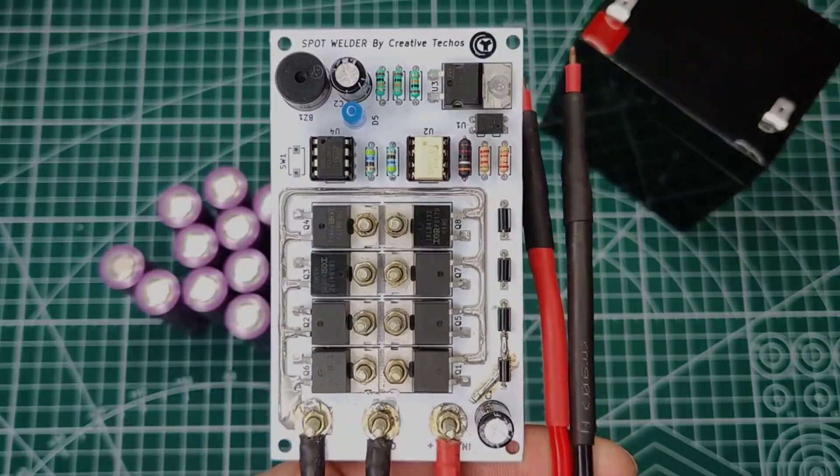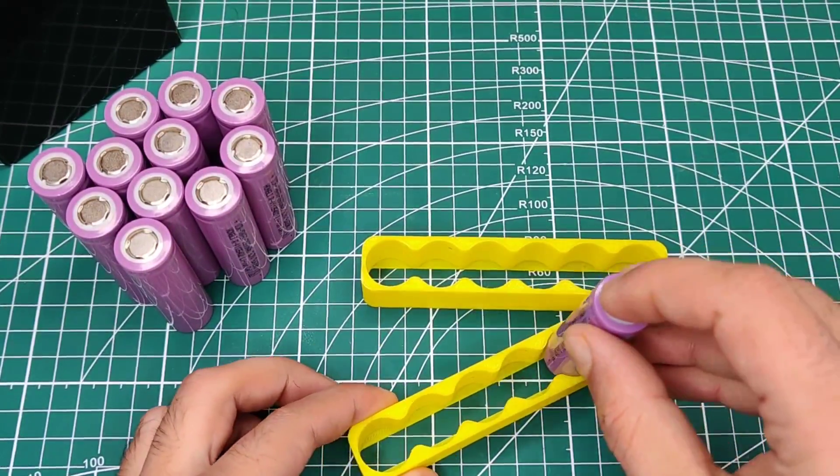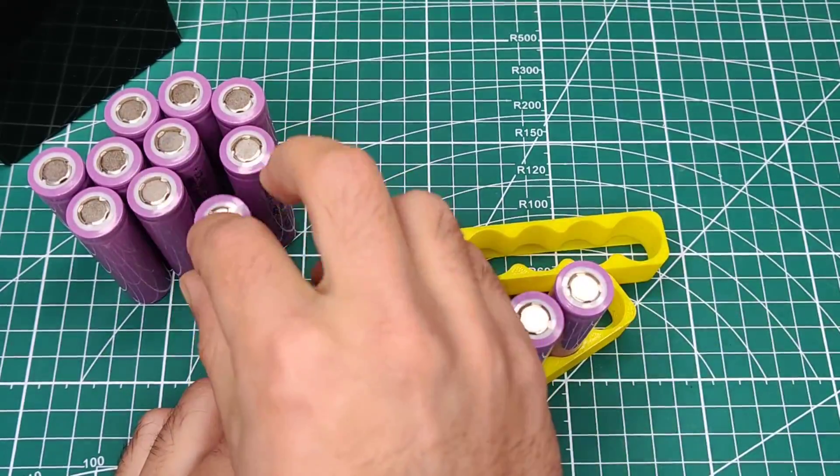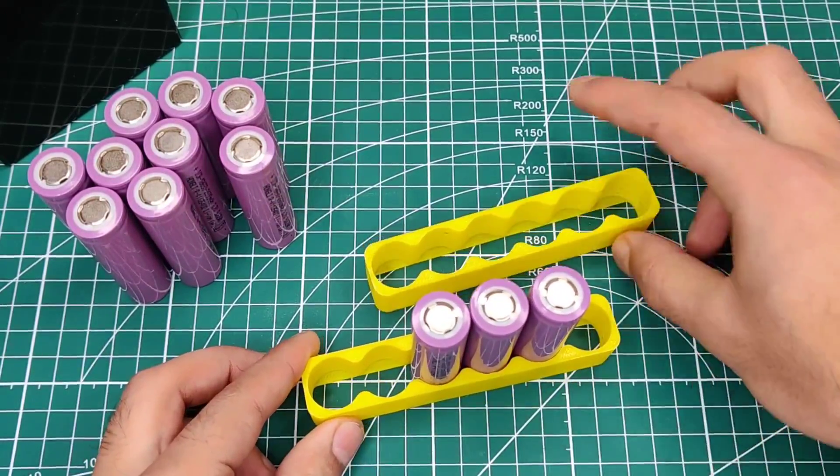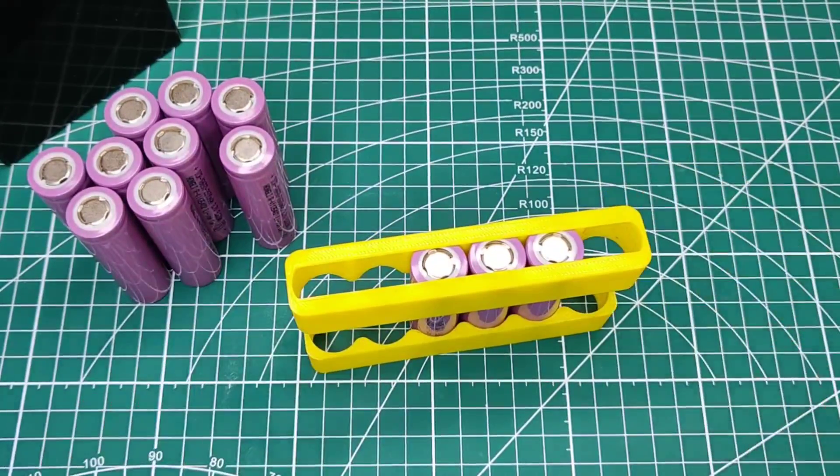I used this 3D printed battery holder for easy spot welding. It will help you to hold the batteries at correct position during welding. I first placed three cells in the holder with all positives upwards. This way we can connect them in parallel.